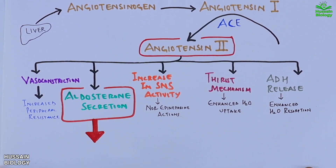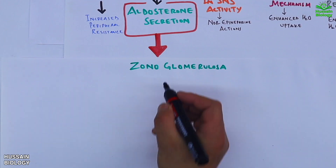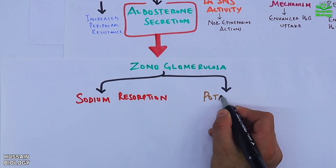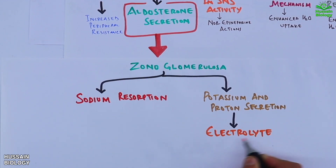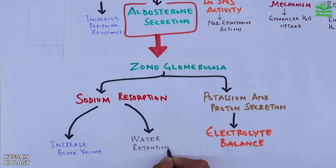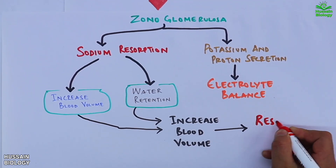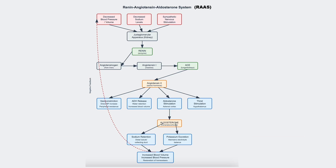Aldosterone secreted from the zona glomerulosa acts on the kidneys, coming from the adrenal glands, promoting sodium resorption and potassium and proton excretion, resulting in electrolyte balance. Due to this sodium resorption, we also get water retention, which ultimately leads to an increase in blood volume and restoration of blood pressure — that's homeostasis.